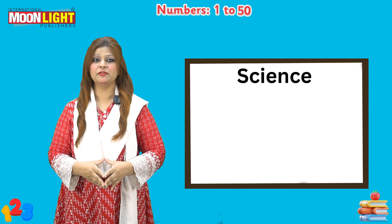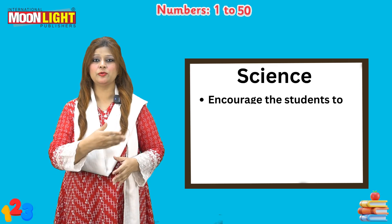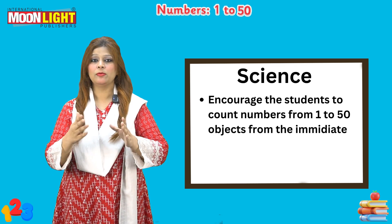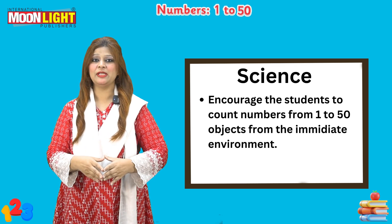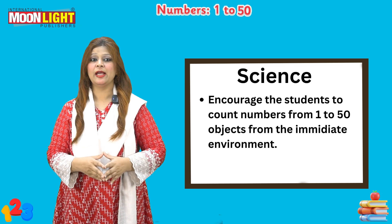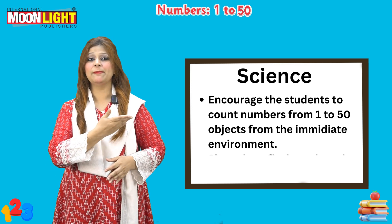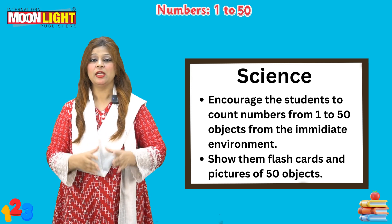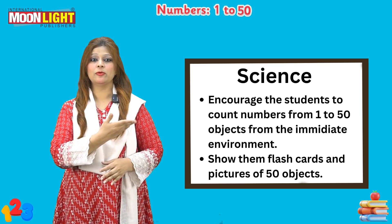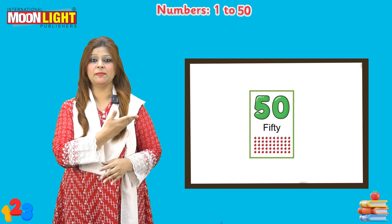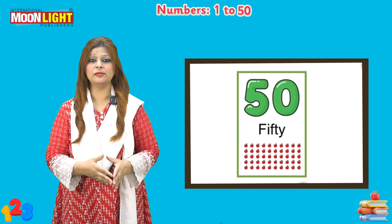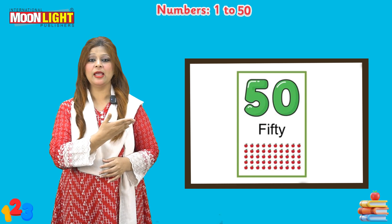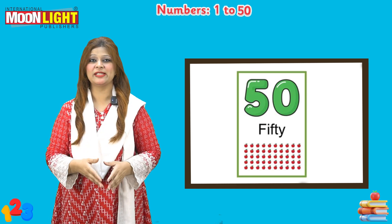For the first section activity, you need to encourage the student to count numbers from 1 to 50 using objects from their immediate environment. You are going to show them flashcards and pictures of up to number 50, and they are going to find the objects. This is the number 50 card I have taken for you as an example, and the students are going to look at this number card and find these objects.